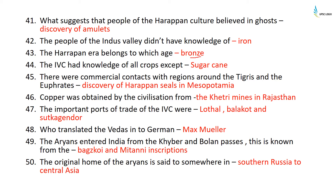The Indus Valley Civilization had knowledge of all crops except sugarcane. There were commercial contacts with regions around the Tigris and the Euphrates, confirmed by the discovery of Harappan seals in Mesopotamia. Copper was obtained by the civilization from the Khetri mines in Rajasthan. The important ports of trade of the Indus Valley Civilization were Lothal, Balakot, and Suktajandor.